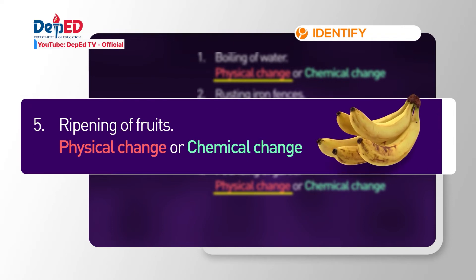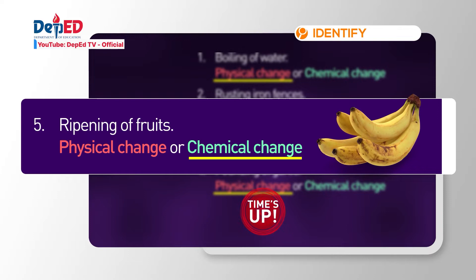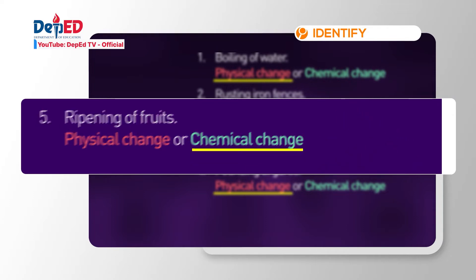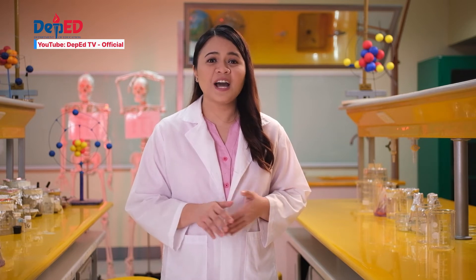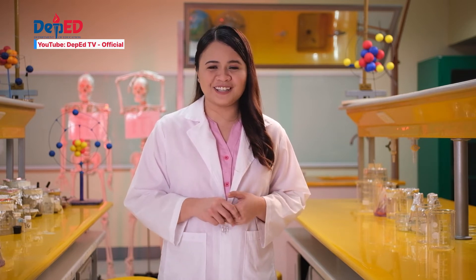And the last one is the ripening of fruits. What is your answer? You're right. It's chemical change. When fruit ripens, it changes its color and taste. Changes in color and taste of a fruit are evidence that a chemical change has taken place. That was an easy one. Good job!